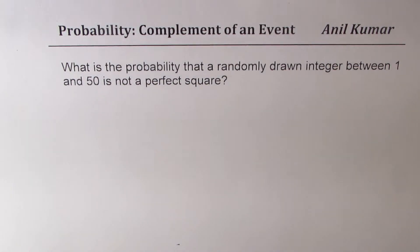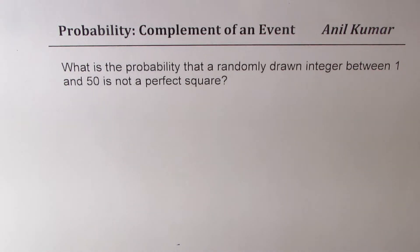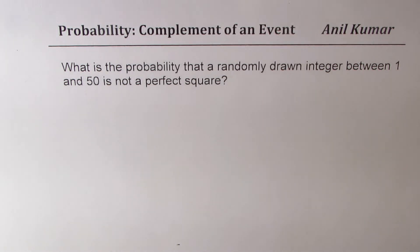I'm Anil Kumar, sharing with you an example of probability where we are going to solve a question using the concepts of complement of an event. The question here is: what is the probability that a randomly drawn integer between 1 and 50 is not a perfect square?